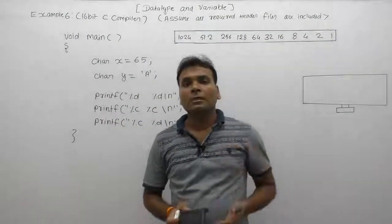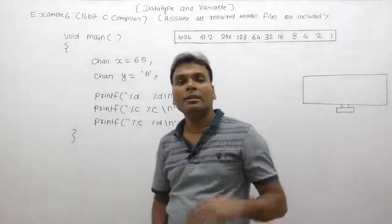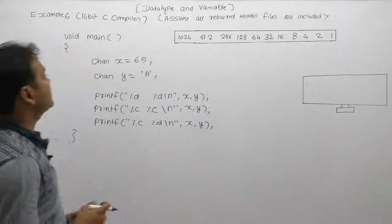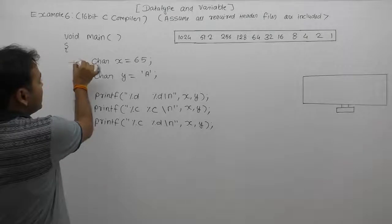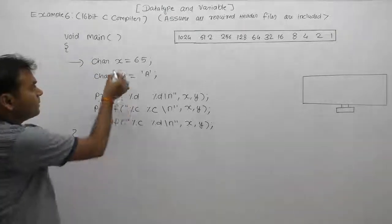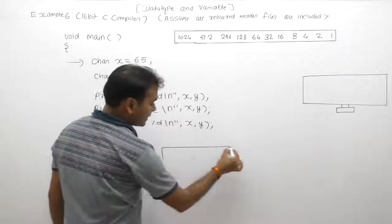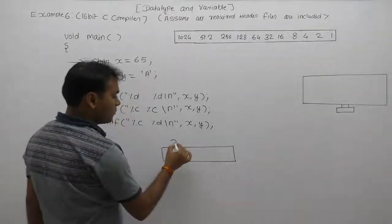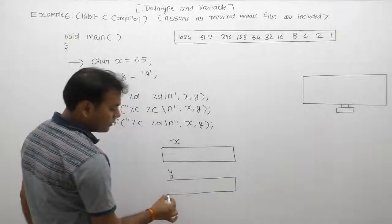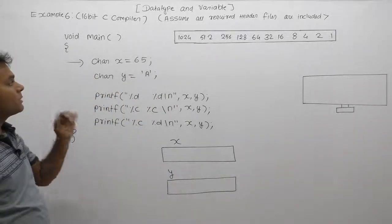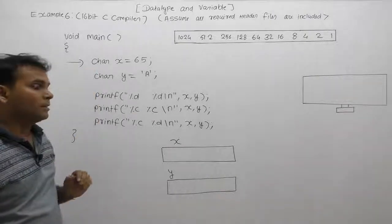In the previous case, most examples with respect to interior representation — here we are declaring variable types as characters. As we know, the size of character in C is always one byte. When we execute this program, memory allocation is performed for variable x and variable y. Since x is a character type variable, it will take one byte; same for y, which is also a character type variable, therefore it will also take one byte in memory representation.